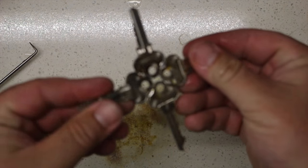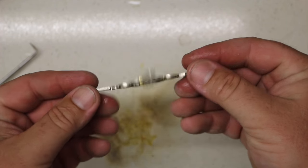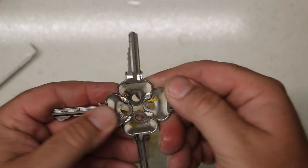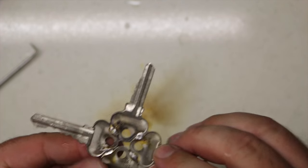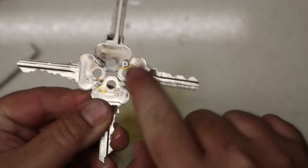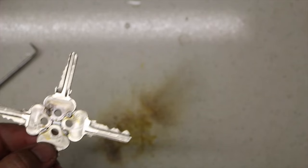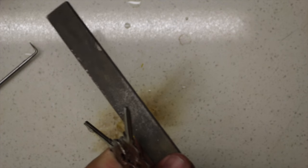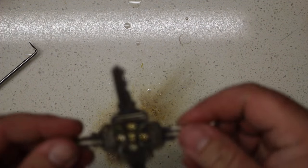There you have it, that's how you solder keys together. It's pretty simple. If you want you can go back and just file these off to make them nice and smooth, just with a flat file or even a round file. Depends how nice you want them to look.